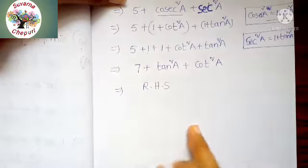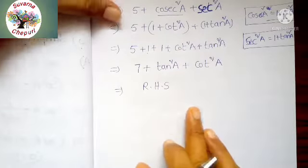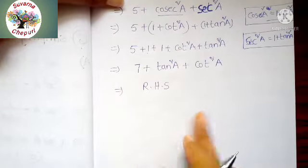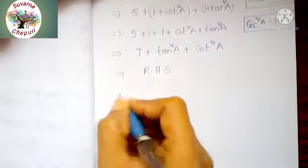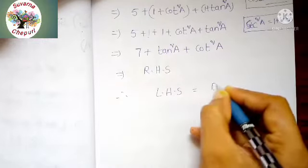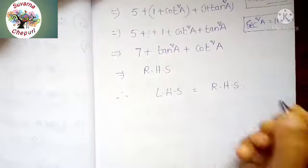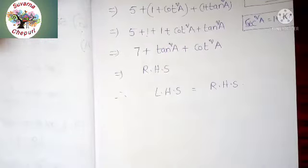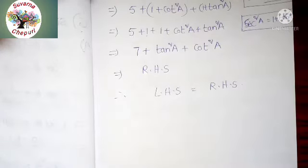Finally, at last, we got the answer. Therefore LHS equals RHS. The 7th sum is completed. Next, the 8th sum.